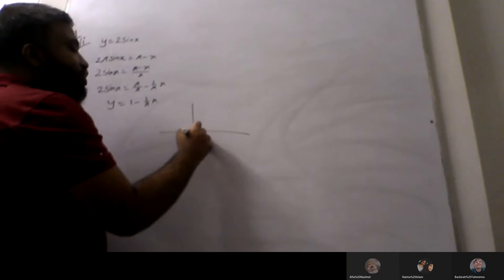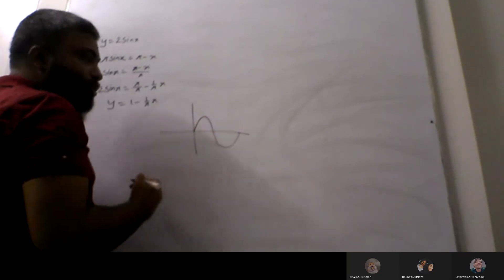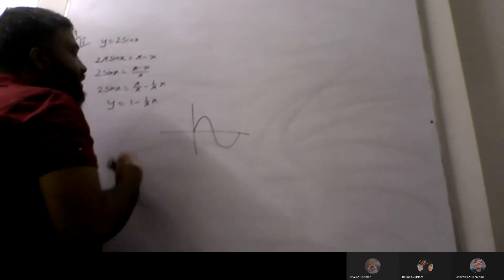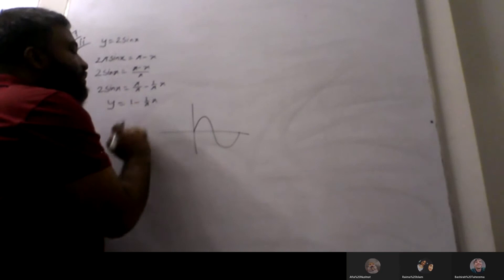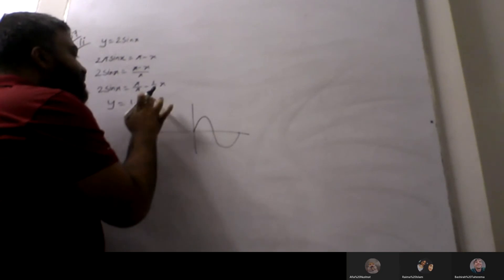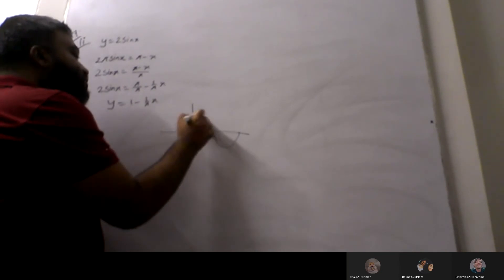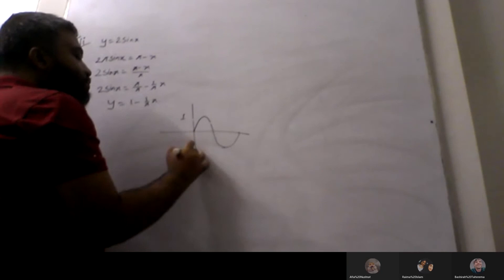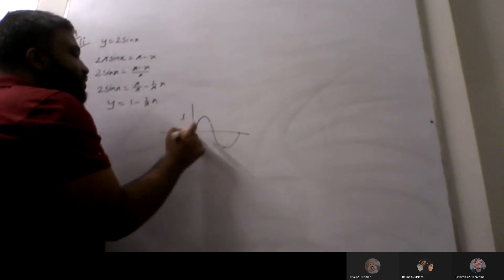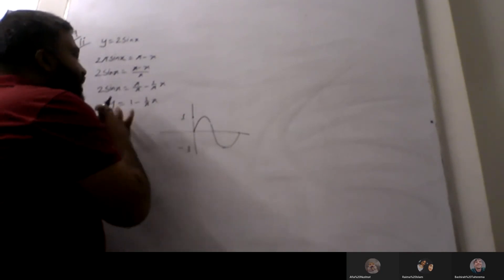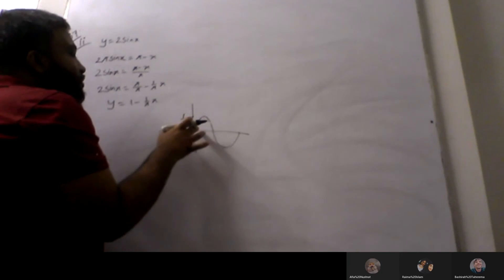So here's the sine function graph that you have to draw. You have y equals 1 minus π by x, a line to drop where x is a value of zero, then y is a value of one. Here is positive one and negative one. When x is zero, y is one. When y is zero, x value is one.